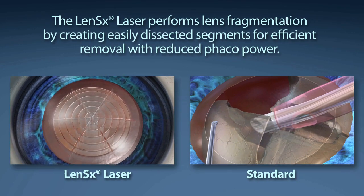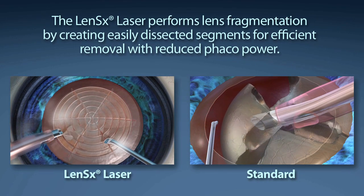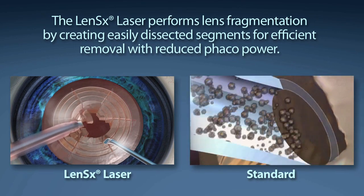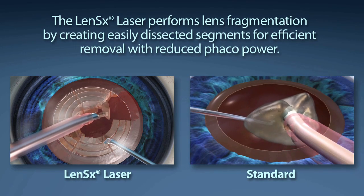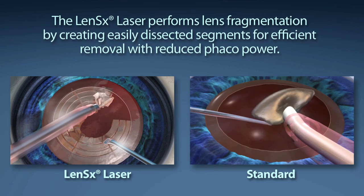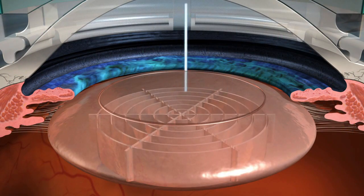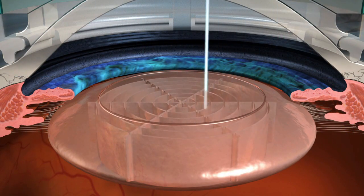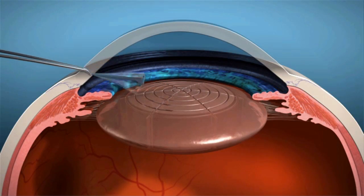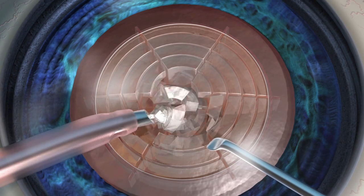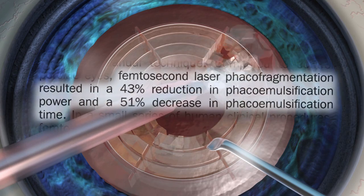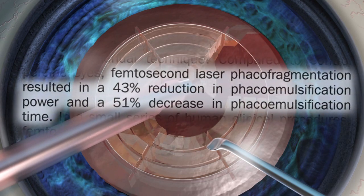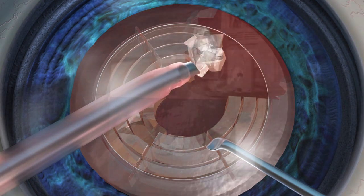Standard cataract surgery requires a phacoemulsification machine to segment and remove the content of the cataract. The goal of your surgeon is to reduce the amount of phaco energy used to remove your cataract. The LensX laser performs lens fragmentation, creating easily dissected segments for efficient removal with little or no phaco power. With laser pulses utilized, the LensX laser provides the surgeon a 43% reduction in phaco power and a 51% reduction in phaco time compared to the standard cataract procedure.